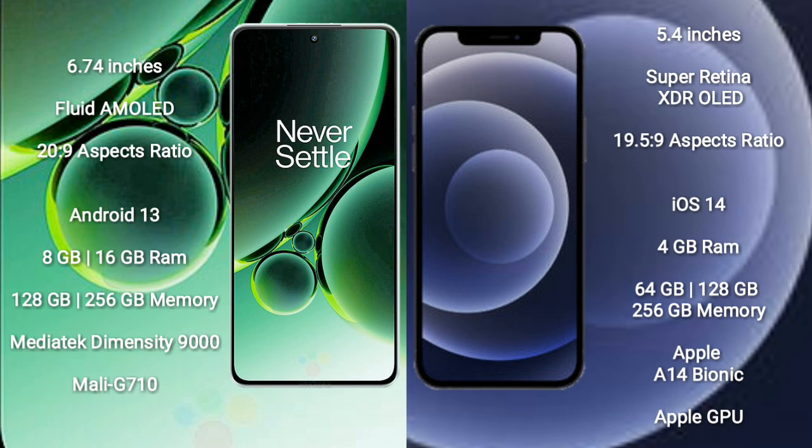OnePlus Nord 3 runs on the Android 13 operating system. iPhone 12 mini runs on iOS 14. OnePlus Nord 3 comes with 8GB or 16GB RAM, 128GB or 256GB internal storage, MediaTek Dimensity 9000 processor, and Mali-G710 GPU. iPhone 12 mini comes with 4GB RAM, 64GB, 128GB, or 256GB internal storage, Apple A14 Bionic processor, and Apple Graphics GPU.